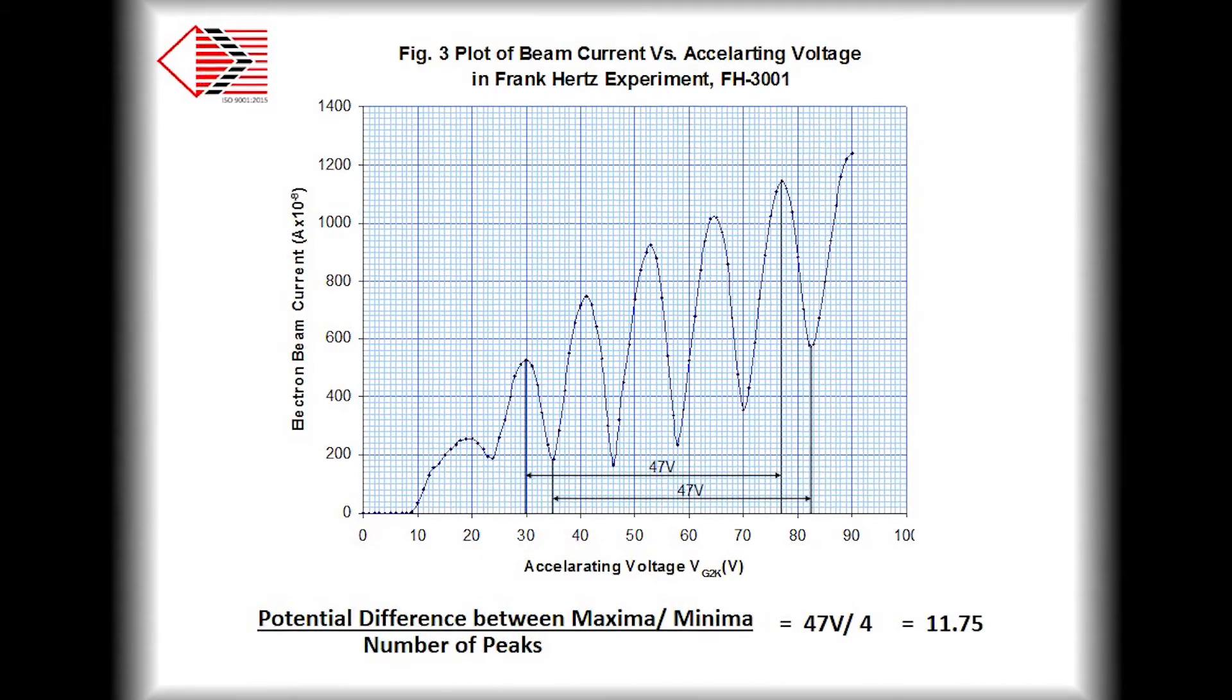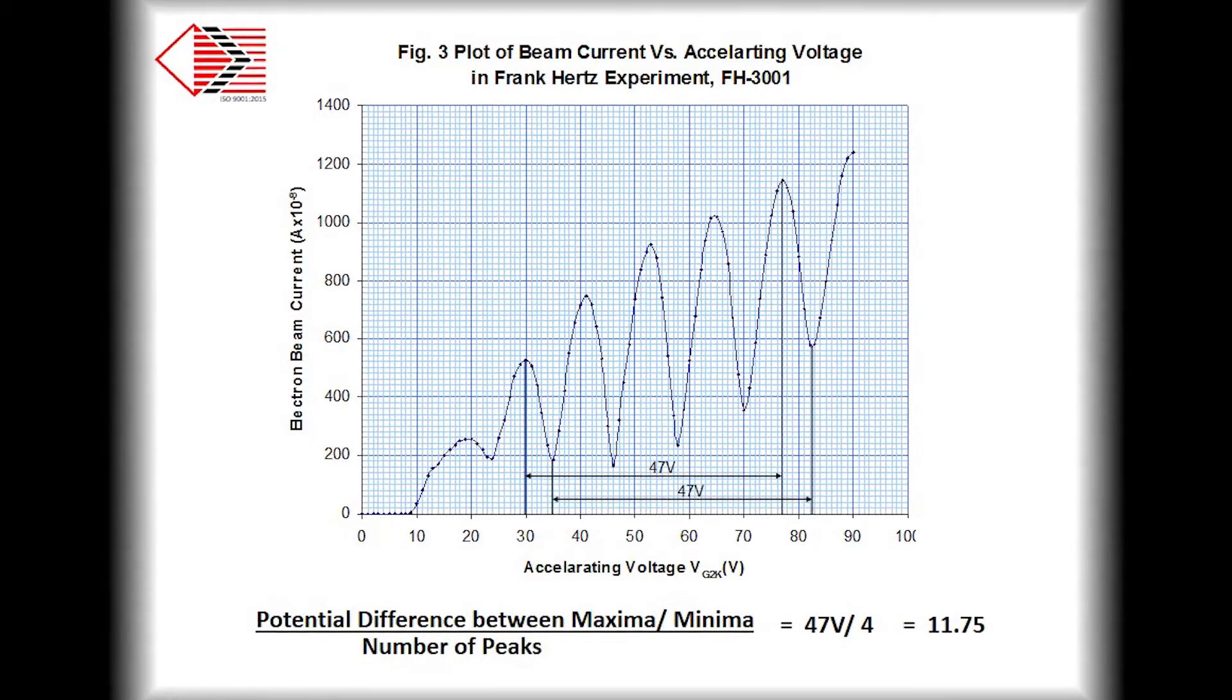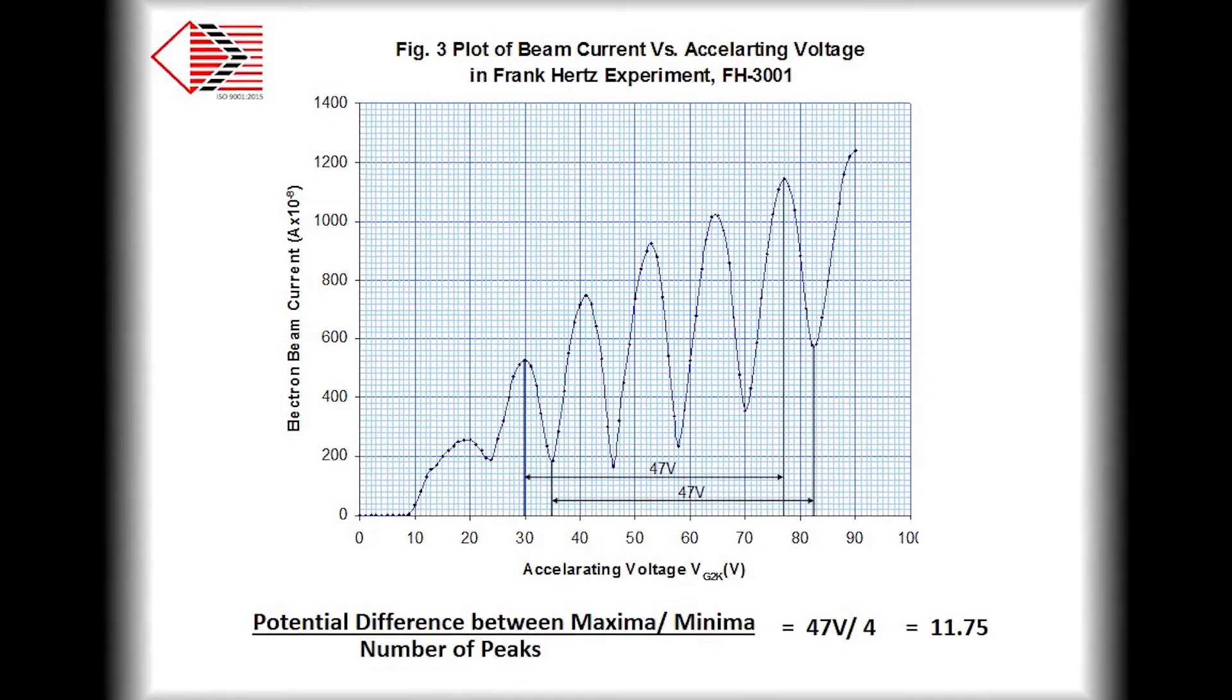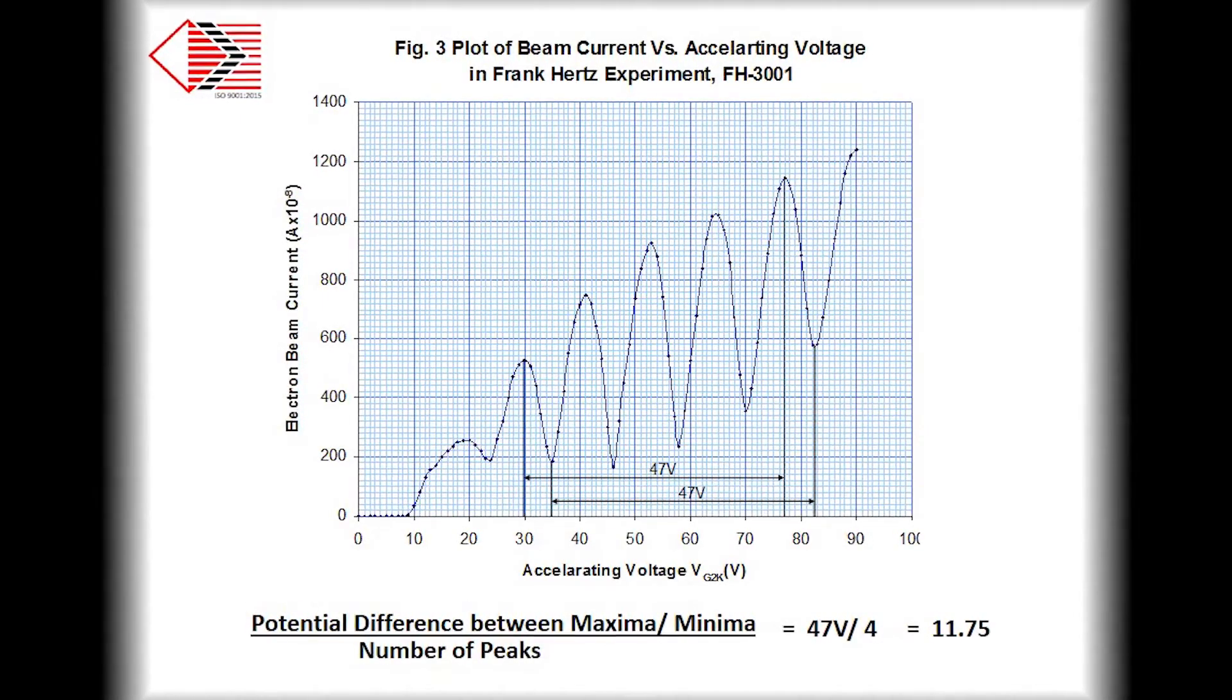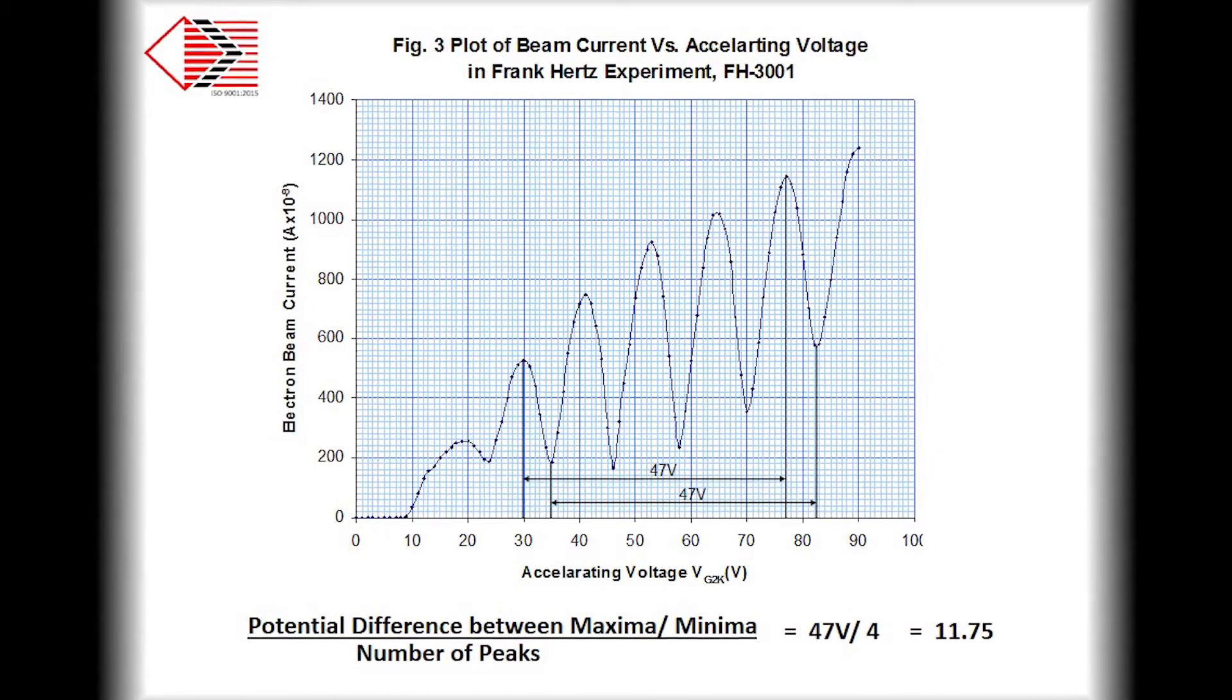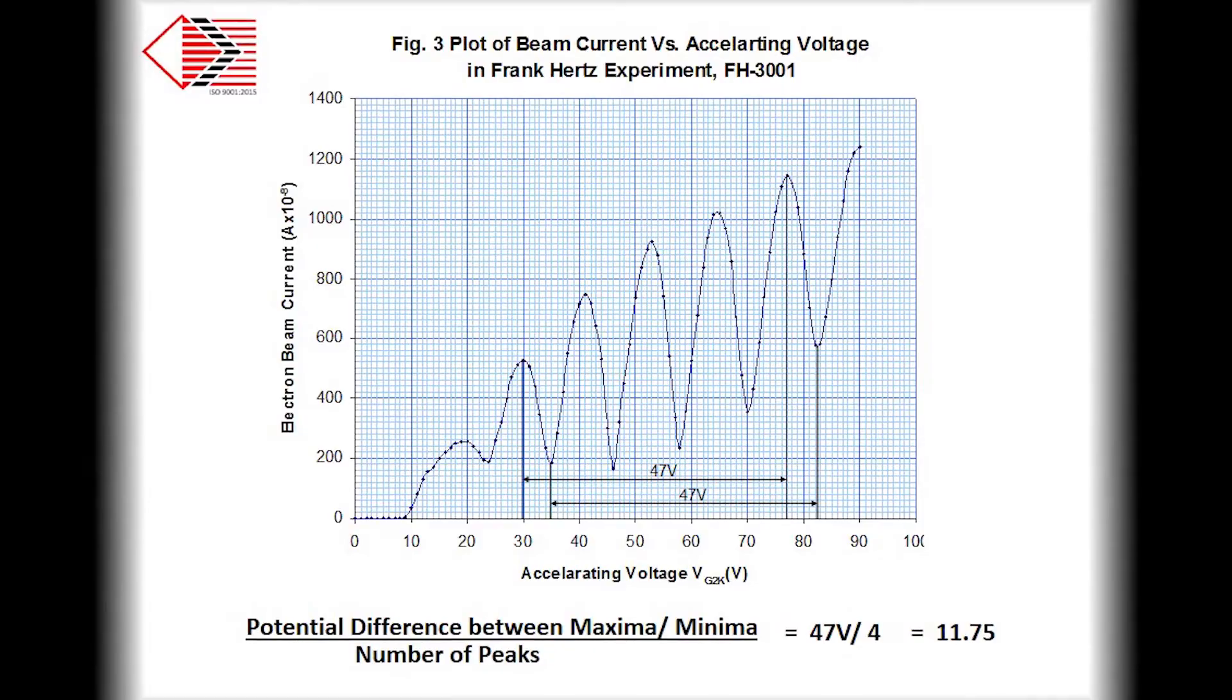The potential difference between two peaks is 11.75 volt in our case, which is equal to energy transferred by electron. Hence, the value is 11.75 electron volt, which is within 1% of standard value.